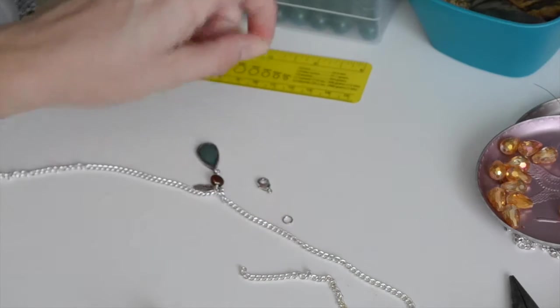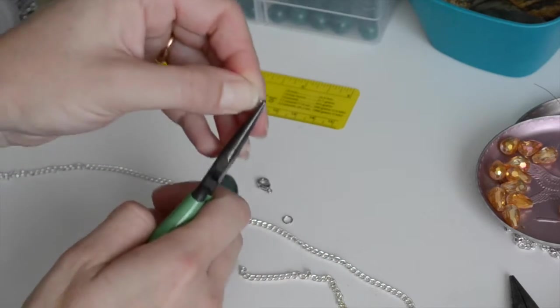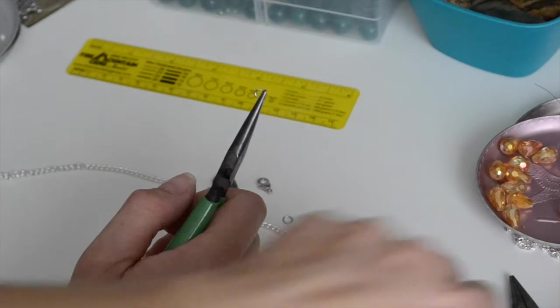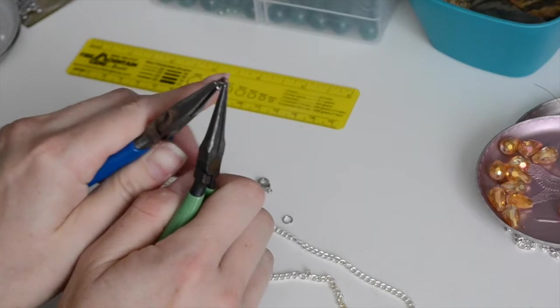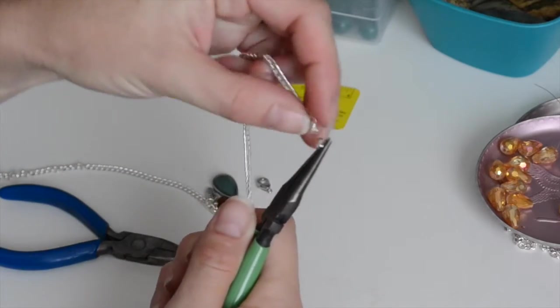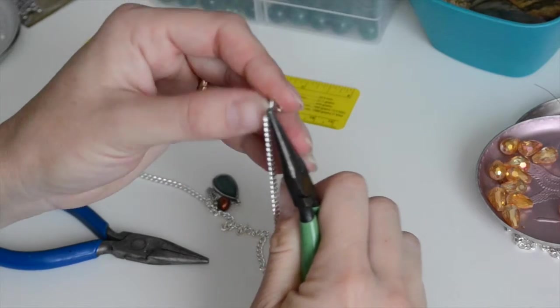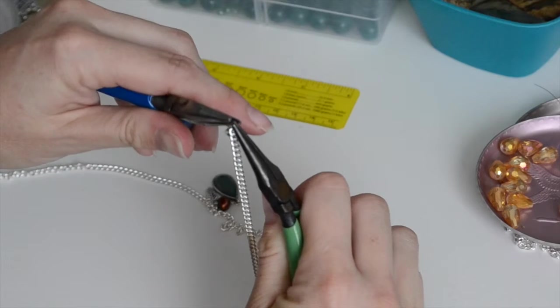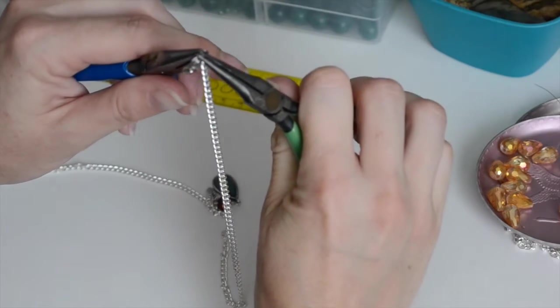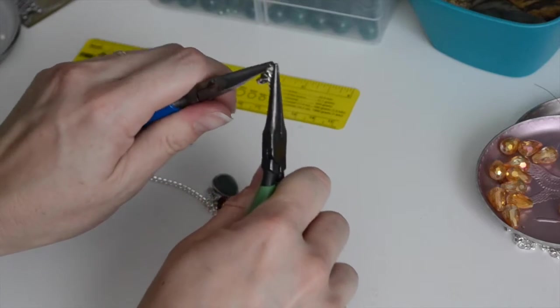So we're going to take our three millimeter jump ring, the smaller of the three. I'm going to try and get a hold of it with our little needle nose just to the side of where it opens. We're going to take our other needle nose. Sweeping motion, open it up. We're going to pop our chain on there. And clasp. And hold them to end. Got a lot stacked on there, so sometimes it's hard to get a hold of to close it. And with that sweeping motion, we're going to close it back up.